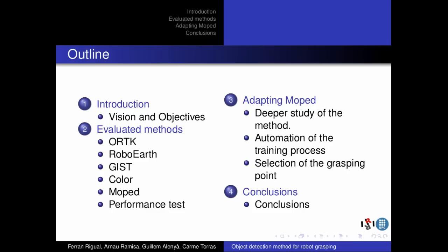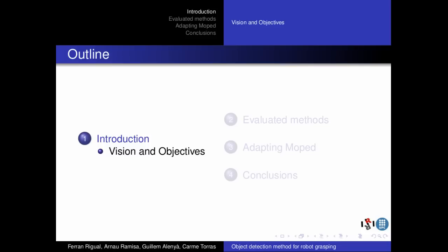The presentation is organized in four main sections. First of all, the vision and objectives of the project will be introduced. Secondly, there is a review on the initial methods to decide which is the one which best solves our problem. After that, the selected method is studied in more detail to find some possible adaptations. At the end, the conclusions are discussed. So, let's start with the vision and the objectives.